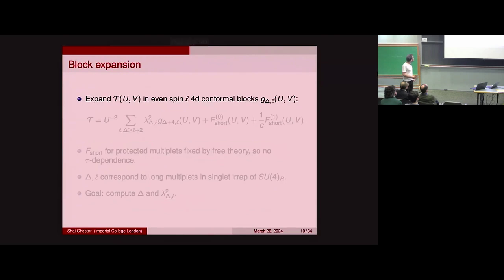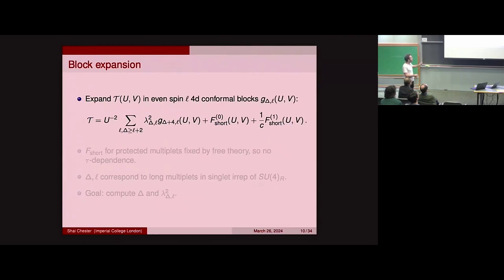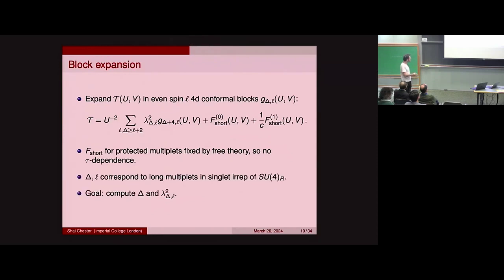By studying T(U,V), we've already satisfied all kinematic constraints of supersymmetry. As in any four-point function in a CFT, we can take the OPE twice to expand it in conformal blocks. There are two kinds of multiplets that appear: short multiplets, whose scaling dimensions and OPE coefficients are completely fixed in terms of the central charge C and are linear in 1/C — we sum them up exactly once and never think about them again. All the non-trivial information is in the long multiplets, where both the scaling dimensions delta and OPE coefficients lambda are unknowns. The goal of this talk is to compute the CFT data delta and lambda.